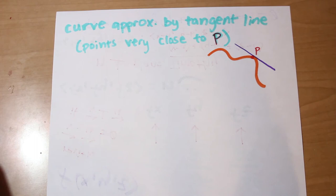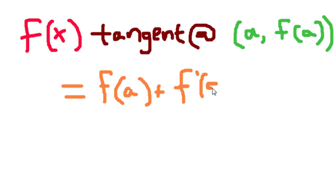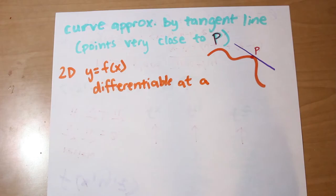In 2D, y equals f(x), where f was differentiable at point a. f(x) is tangent at (a, f(a)), which is equal to f(a) plus f prime of a times (x minus a), which is equal to L(x), referencing linear approximation.